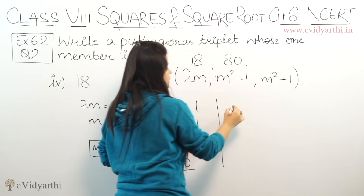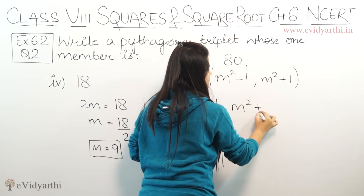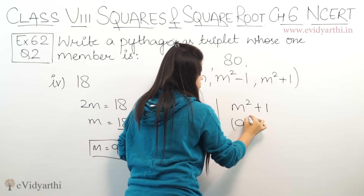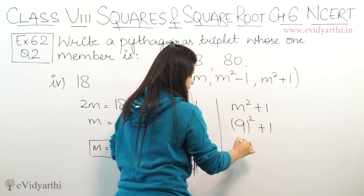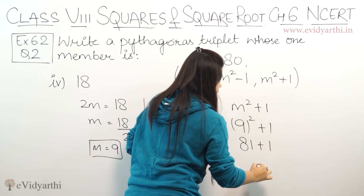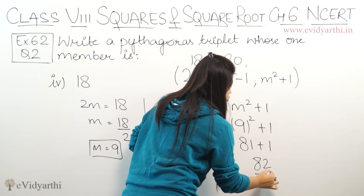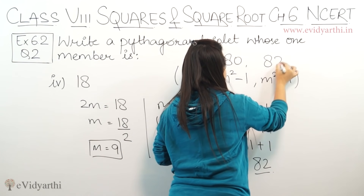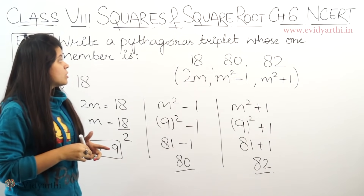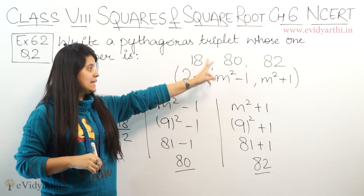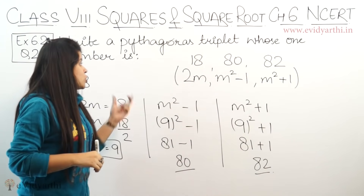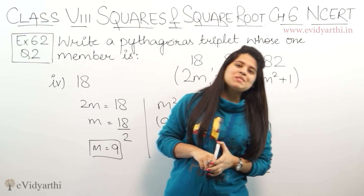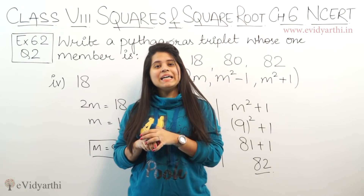Moving to the third number which is m² + 1. So 9² + 1, and 9² is 81 plus 1, which is 82. The third number is 82. The Pythagoras triplet we have is 18, 80, and 82. This was the last part of this question, question number 2 from exercise 6.2. Now let's come to the next exercise.